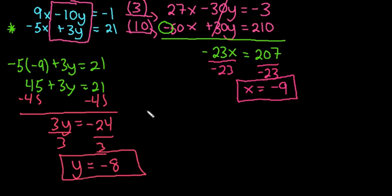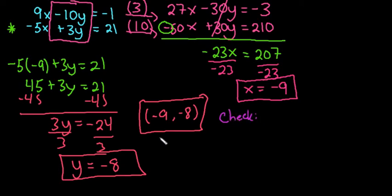So we end up with y equals negative 8. So if we were to write this as an ordered pair, we would have negative 9 comma negative 8. And as always, I always check this to make sure that I didn't make a mistake.